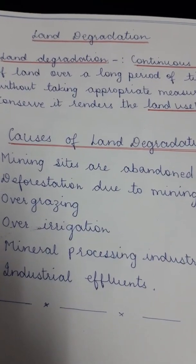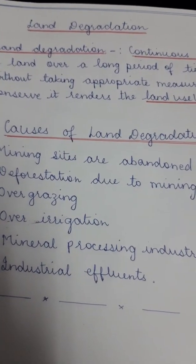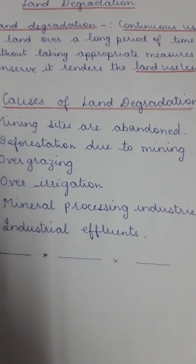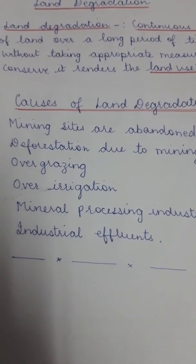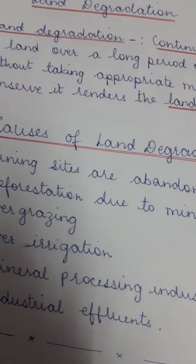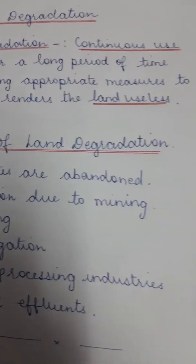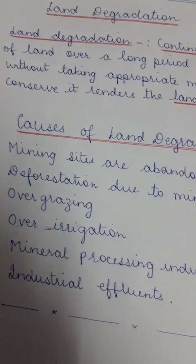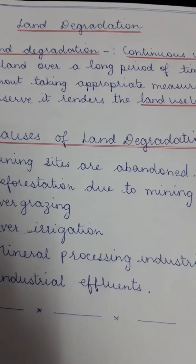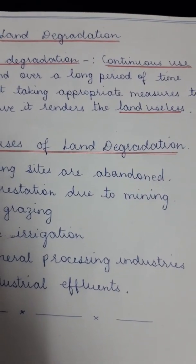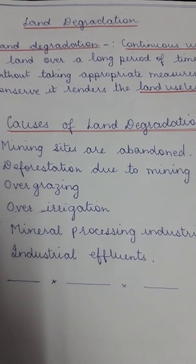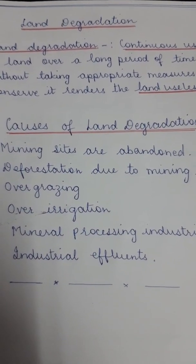Our next topic is land degradation. When we use land for a long period of time without taking proper care of it, it becomes useless. We can define land degradation as the continuous use of land over a long period of time without taking appropriate measures to conserve it, which renders the land useless. If we lose land due to land degradation, then with our finite availability of land, it becomes a very serious issue.